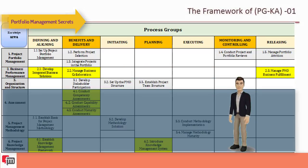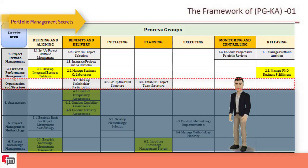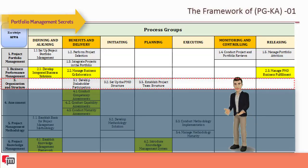The third knowledge area is organization and structures. The organizational alignment of project managers is a business decision. There are three processes: set up the PMO structure, establish project team structure, and develop stakeholder participation.